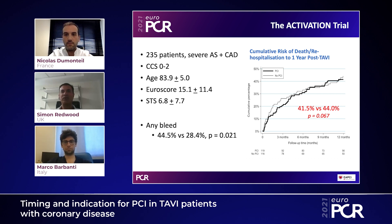Importantly, we also showed higher bleeding in the pre-TAVI PCI group, although there was a slightly higher number of patients on anticoagulation in that group. The take-home message is: if the patient has significant angina, they probably should have pre-TAVI PCI. If they don't have significant angina, we should treat the aortic stenosis and then address the coronaries post-TAVI if necessary.